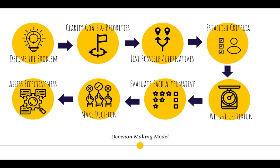The economic decision-making model is pretty straightforward. We start with defining the problem, we clarify goals and priorities, we list possible alternatives, we establish criteria, we weight those criteria, we evaluate each alternative using that criterion, and then we make the decision. Afterwards, we assess how effective the decision was.